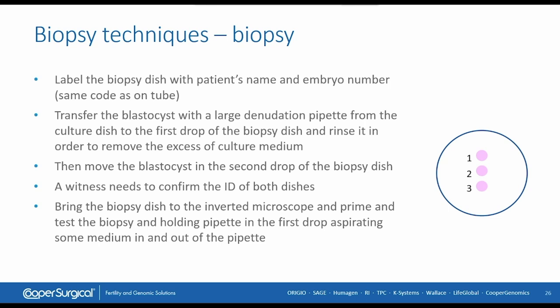To start the biopsy, we label the biopsy dish with the patient's name and embryo number — the same code used on your sheets and on the tube where the cells will be placed. We take the blastocyst with a large handling pipette and bring it into the first drop in our dish for washing, to avoid diluting the HEPES/MOPS buffered medium. Then we bring it into drop number two — a witness must confirm we are placing embryo number one into dish number one. We then prime our biopsy and handling pipettes in drop one and test the injection/aspiration system.